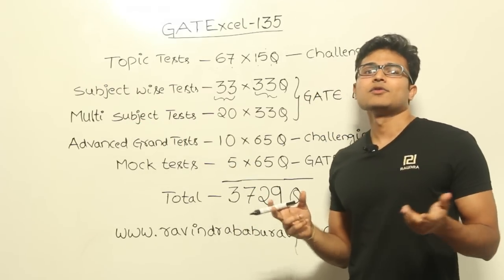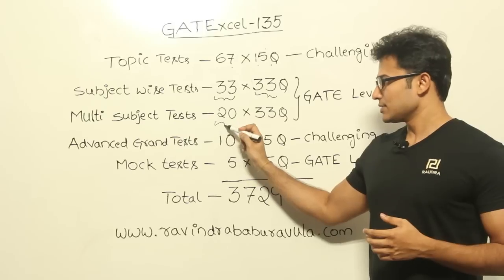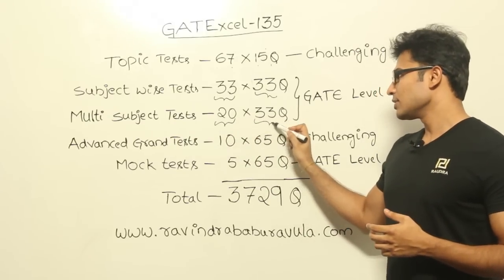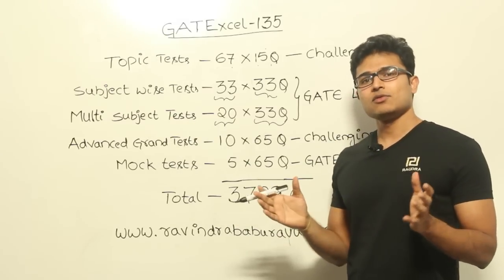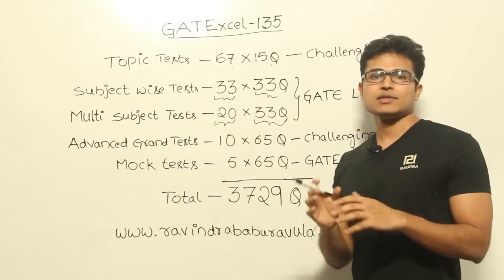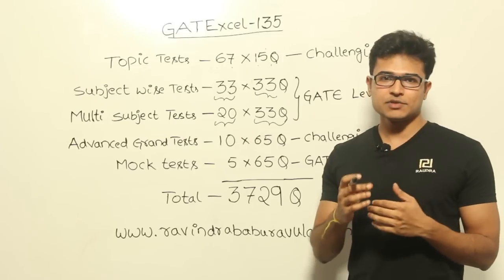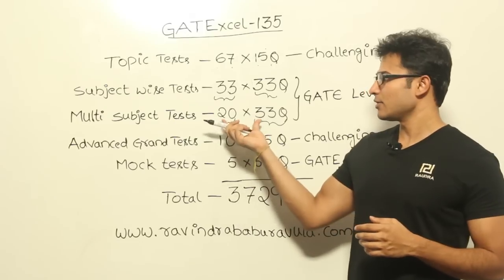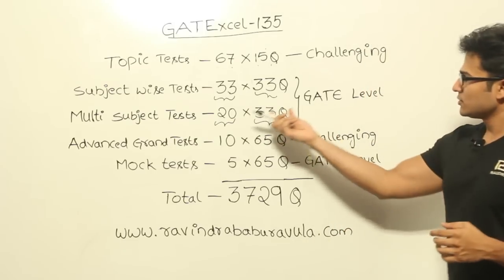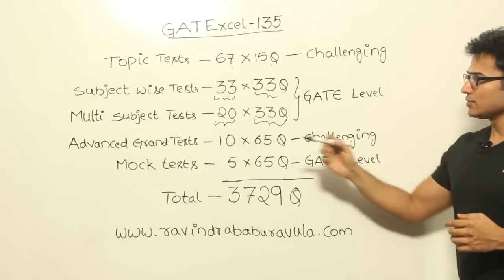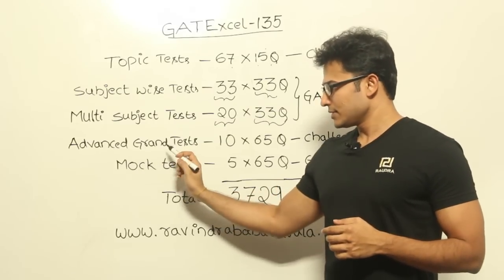The next one is multi-level test. Multi-level test means we are going to combine two or three subjects together and form one test. We are going to have 20 such tests and 33 questions will be there in each test. In the multi-level test we try to combine questions from various two or three subjects together, so that you will be able to practice recalling various subjects one after the other. This will give you practice of recalling different topics, and these questions will also be at the GATE level.